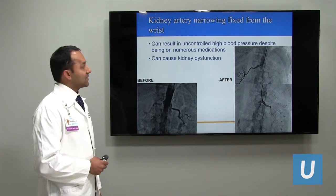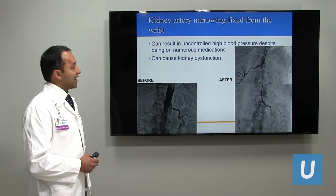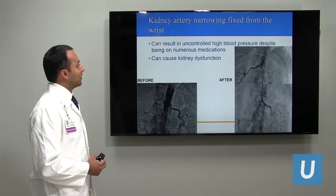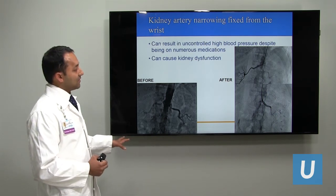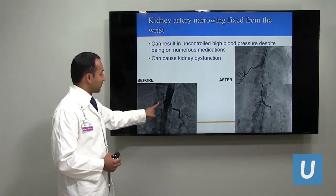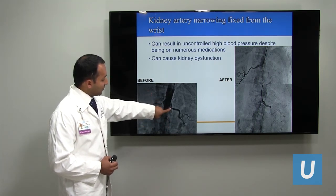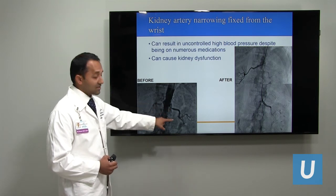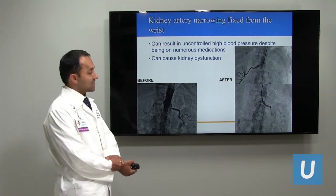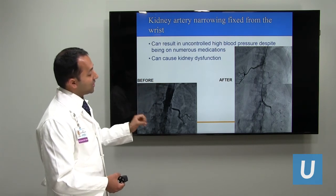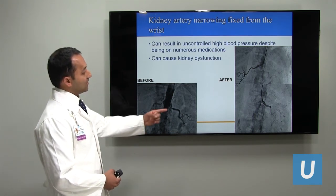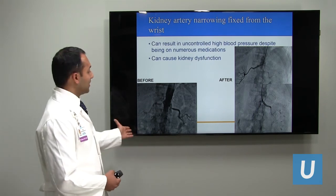Switching gears from the legs to the kidneys: kidney artery narrowing can cause very high blood pressure that is difficult to treat, and can worsen heart failure symptoms. On this slide, you can appreciate the two arteries providing blood flow to the kidneys, with severe narrowings preventing blood from reaching them — resulting in kidney dysfunction and high blood pressure. Using the wrist as an access site, we were able to get into the kidney arteries and open them up with balloons and stents. For kidneys, we use stents rather than drug-coated balloons, and the results are much better after the procedure.